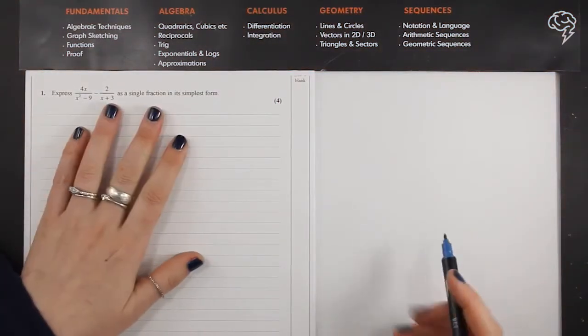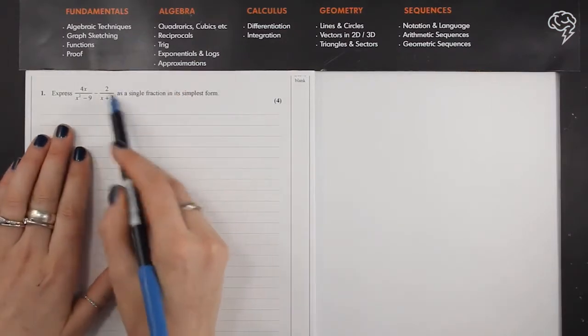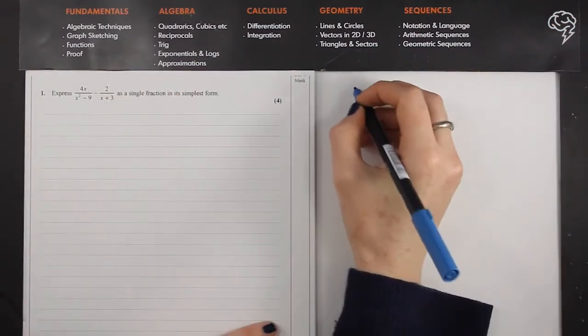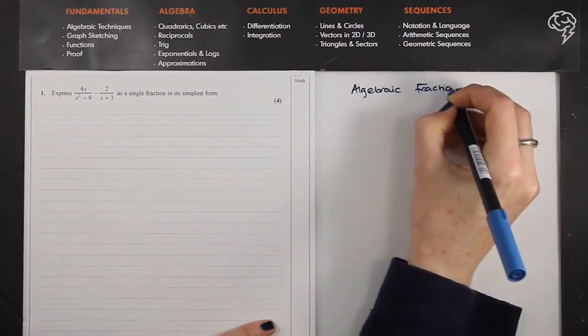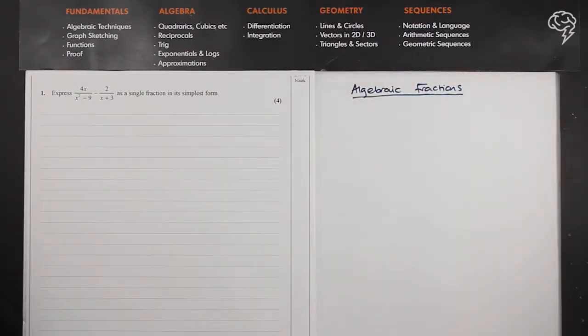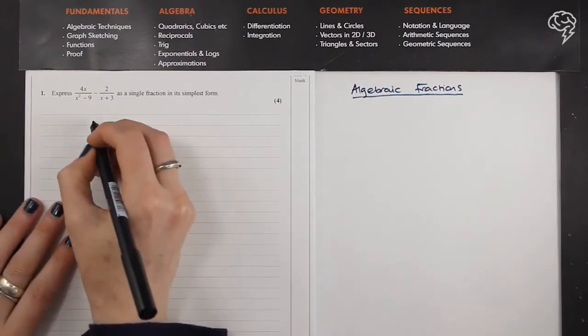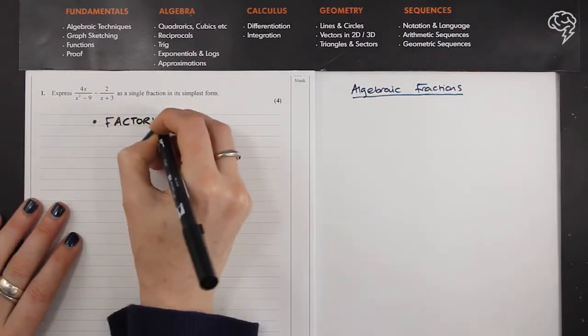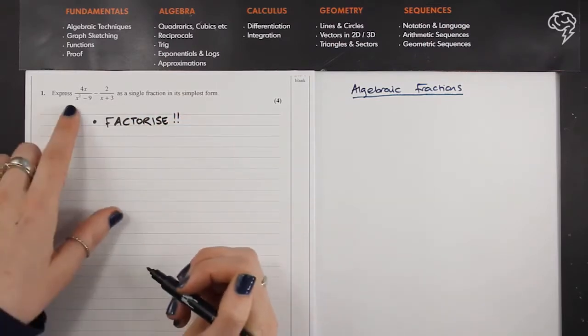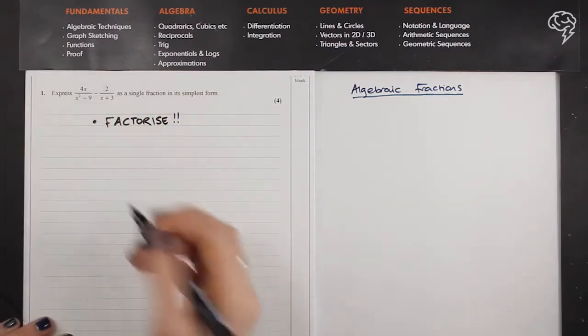We've got a lovely algebraic techniques practice, just adding up some algebraic fractions. The plan of action here, as always, is that we're going to start by factorizing, and then we're going to make a common denominator so that we can join them together.